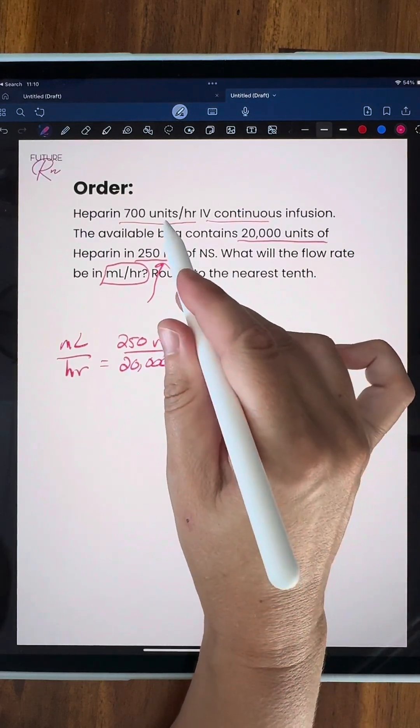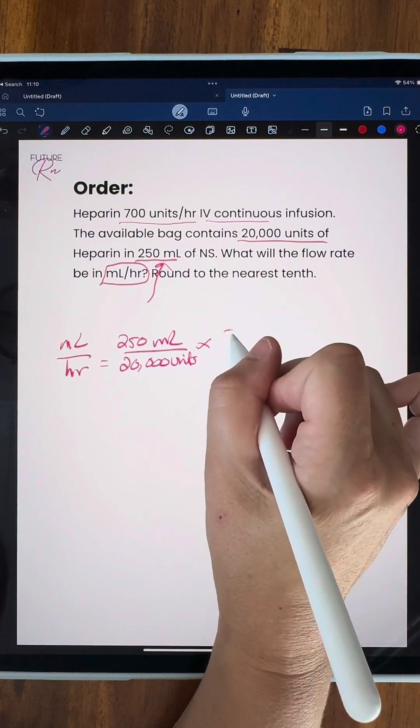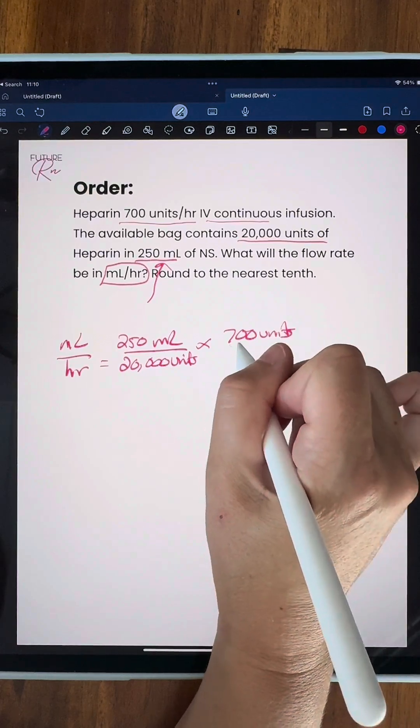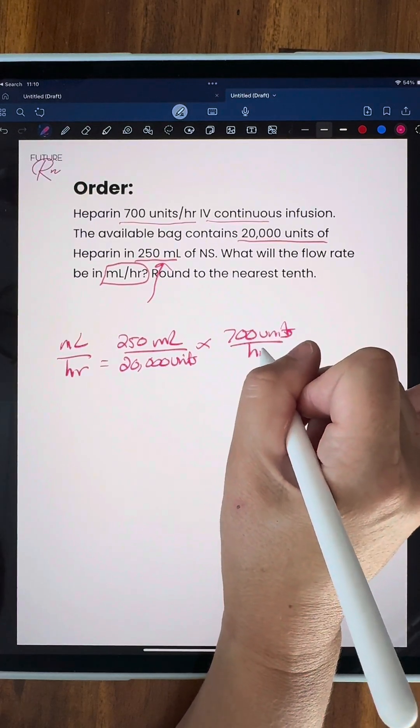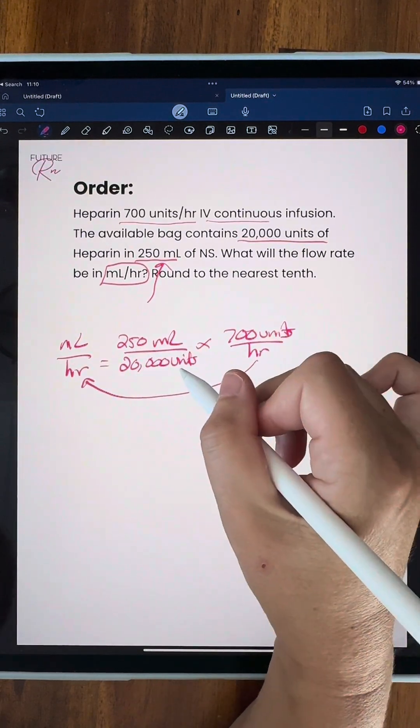Next, we want to get our units up here so we can cross those off since we want to get to our milliliters. So we're going to take 700 units and put that over an hour. And we already have hours, so we don't have to do any conversions there.